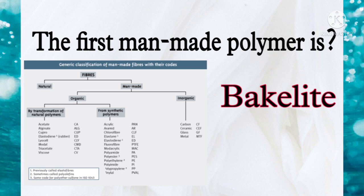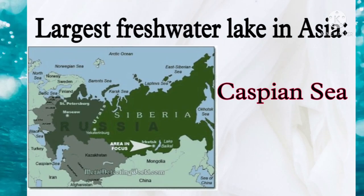Now moving to the next question: what is the largest freshwater lake in Asia? The right answer is the Caspian Sea. The Caspian Sea is the largest lake in Asia as well as the largest inland water body in the world.